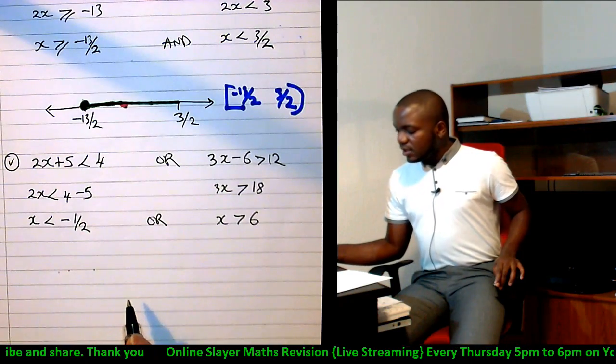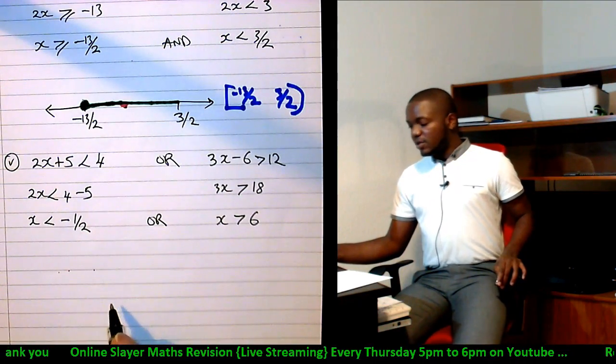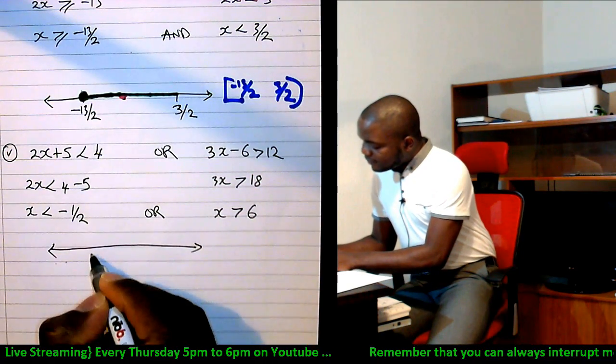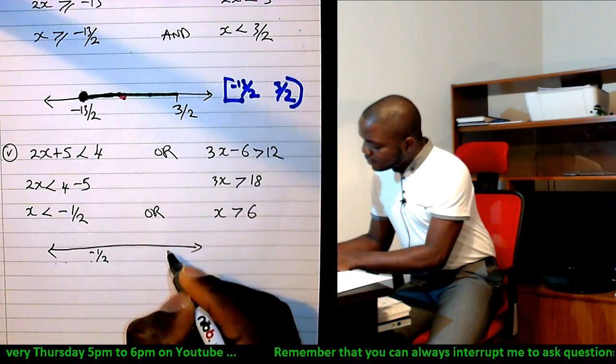So x is less than minus half, or x is greater than 6. How do you represent that in set notation and on a number line? Well, on a number line, you have these numbers: minus half and you've got 6.